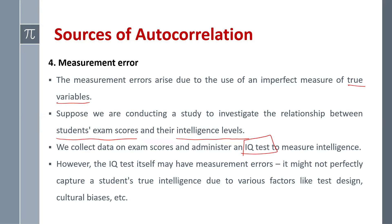So that shows measurement errors arise due to the use of imperfect measure of our true variable. So our true variable is intelligence and we measure this through IQ test, but our IQ test has some measurement errors.